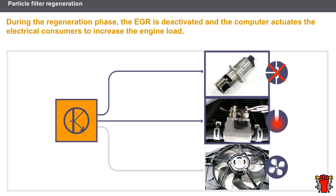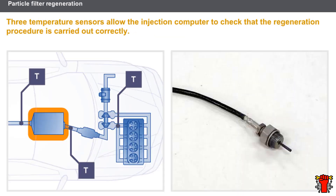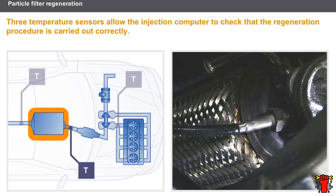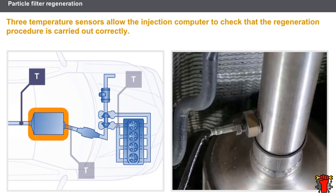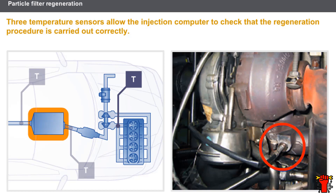To assist in reaching the regeneration temperature, the computer actuates the electrical consumers to increase the engine load. Three temperature sensors allow the injection computer to check that the regeneration procedure is carried out correctly. The sensor fitted upstream of the filter measures the temperature of the gases at the oxidation catalyst outlet, determining whether the catalyst priming temperature has been reached to begin regeneration. The sensor fitted downstream of the filter monitors the rise in temperature due to combustion of the particles and checks the duration of the regeneration procedure. A sensor fitted to the turbocharger measures the temperature of the exhaust gases entering the turbine, preventing too great an increase in temperature that would be detrimental to the life of the turbocharger.